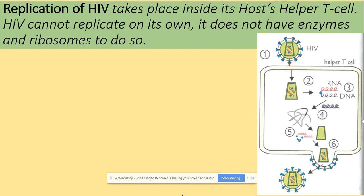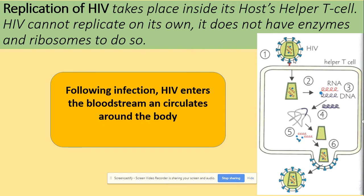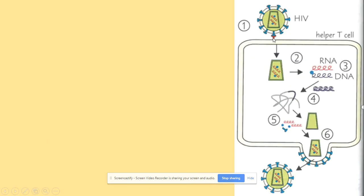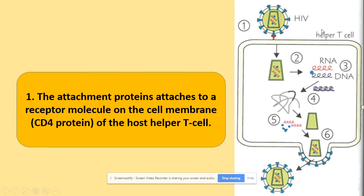Here we are looking at the replication of HIV, which takes place in the host T helper cell. HIV cannot replicate on its own because it does not have enzymes and ribosomes to carry out such a process. In step one, the attachment proteins on HIV attach to the CD4 receptor proteins on the membrane of the host T helper cell.